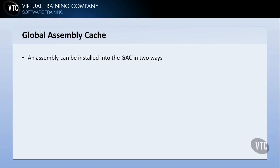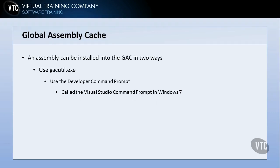An assembly can also be installed using the GAC utility — GACUTIL — executable file. Microsoft always mentions this, and you'll see something about it on the exam. The way you run this is using the Developer Command Prompt, which in Windows 7 is called the Visual Studio Command Prompt. It all means the same thing, and we're going to take a look at that in just a moment in part two.